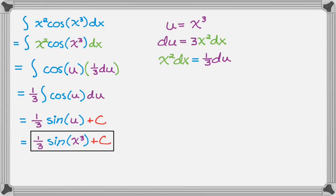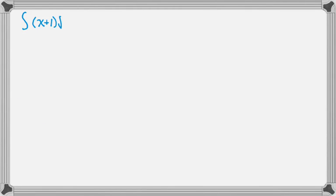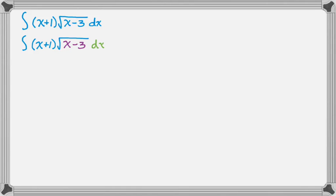One more example — it's going to be a little bit different. We have the integral of the quantity x plus 1 times radical x minus 3 dx. There's not really an obvious choice of what to make u. Anytime I really don't know what to do, I'll typically just take something that's inside a radical and see if that could equal u. If it works, I'll go with it; if not, I'll try something else.